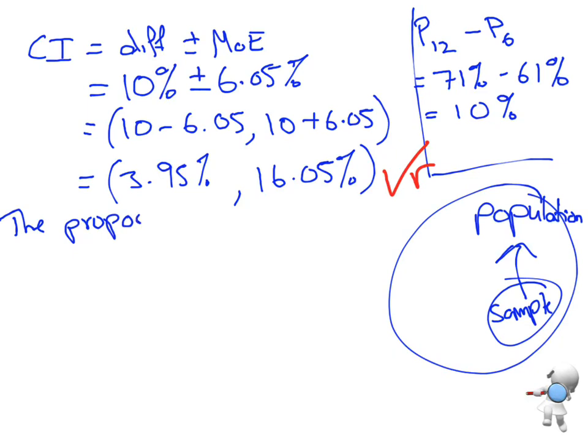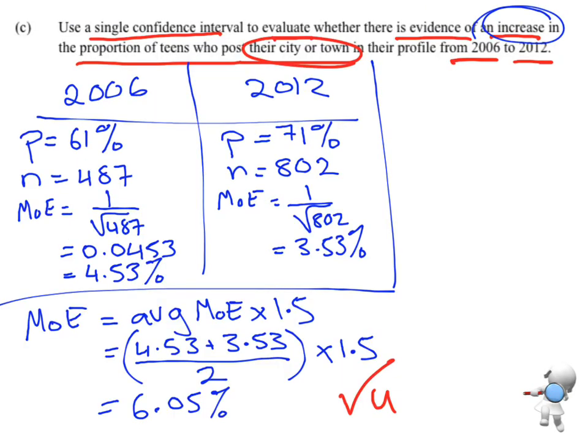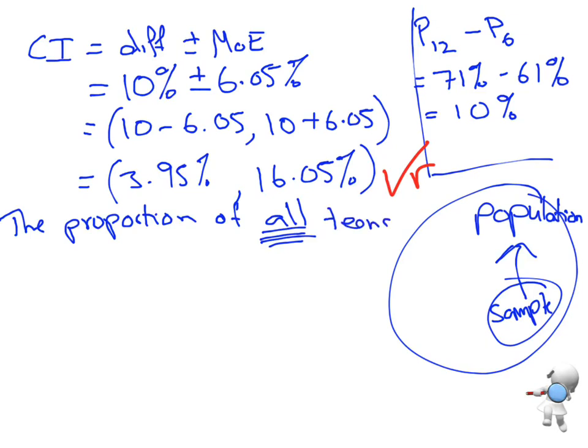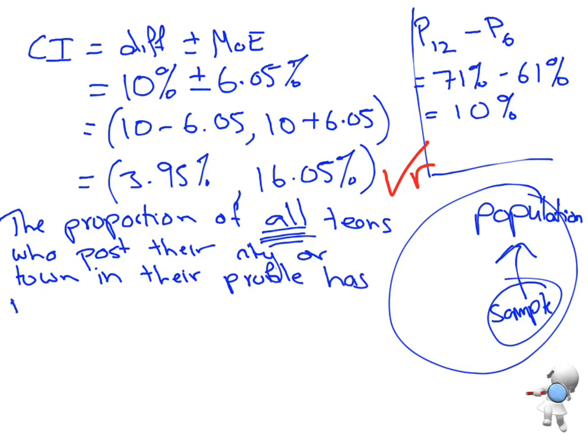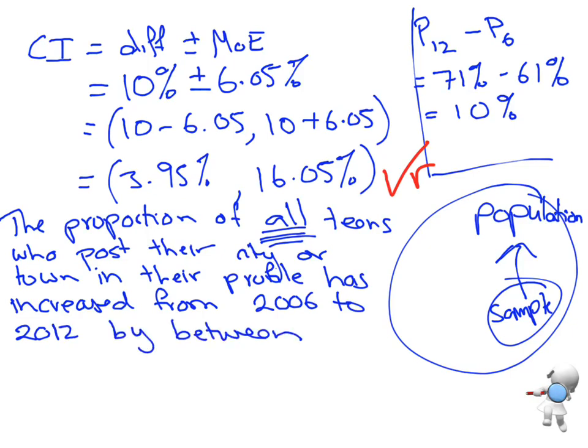So that's what I want to say. The proportion, and I need to somehow identify that we're talking about for the population, the proportion of all. Note that word, all. All teens who post their city or town in their profile has increased from 2006 to 2012 by between 3.95% and 16.05%. Getting to that gets you the excellence.